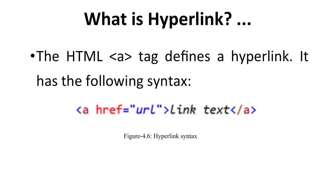The HTML `a` tag defines the hyperlink and has the following syntax: `<a href="URL">link text</a>`. Here, `a` is the tag, `href` is the keyword equal to the address of the URL in double quotes, followed by the link text, and then the closing `a` tag. This is the syntax for the hyperlink.